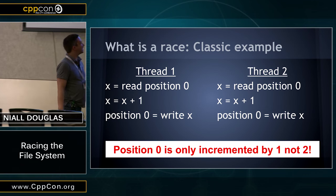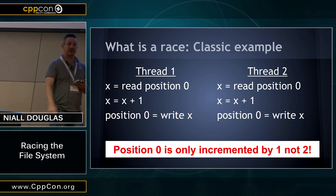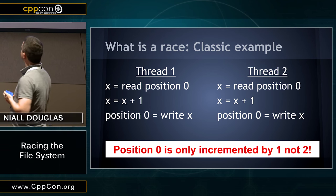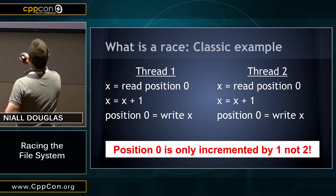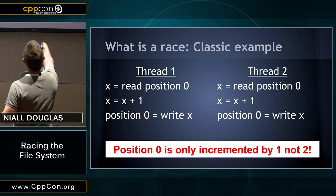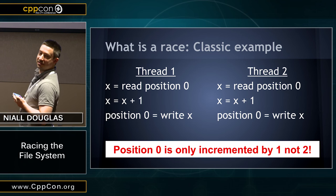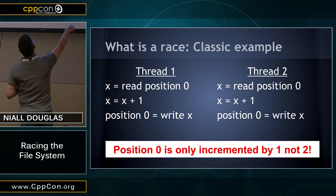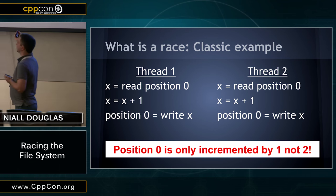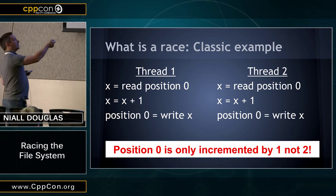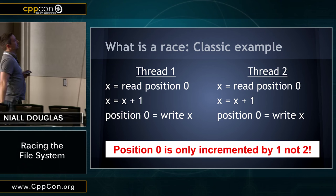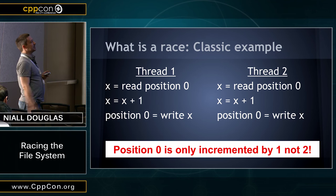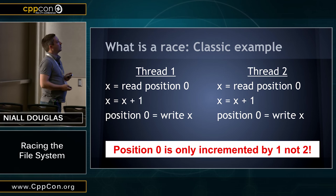Imagine two threads or two processes running concurrently without synchronization. Thread one reads X from position zero, thread two also reads X from position zero. Both do X = X + 1, then both write X back to position zero. The classic outcome — which hopefully nobody in this room doubts — is that position zero is only incremented by one, not two.